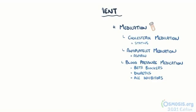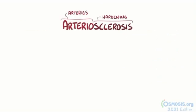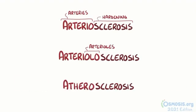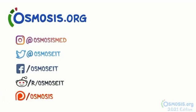As a quick recap: arteriosclerosis literally means hardening of the arteries and describes diseases where arteries become thicker, harder, and less elastic. Arteriolosclerosis specifically refers to the hardening of the arterioles, which often affects blood flow to the kidneys. And atherosclerosis describes the buildup of atheromatous plaques in medium to large arteries. If you're interested in a deeper dive on this topic, take a look at osmosis.org.